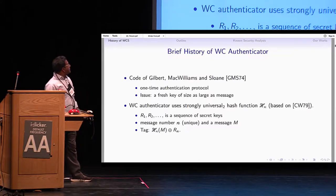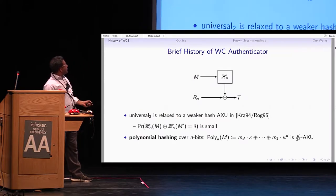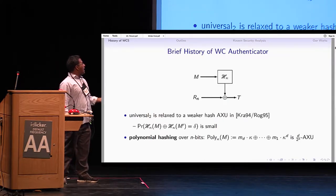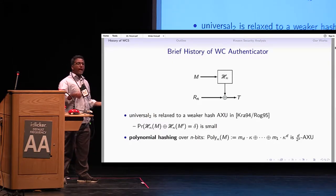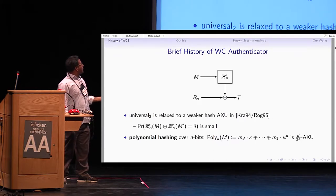In the Wegman-Carter Authenticator, we have the message going into the hash, and we have a random mask which is refreshed every time you authenticate the message.